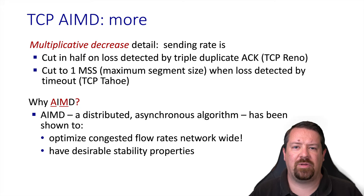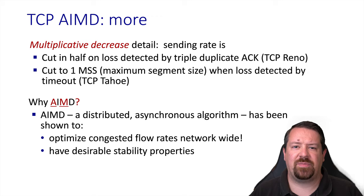The AIMD algorithm has some desirable properties. One is that it can be implemented in a completely distributed manner, so the network does not have to coordinate the increase and decrease events. It also has desirable stability properties, which was necessary after earlier versions of TCP resulted in network collapse due to not reducing their sending rates enough when congestion occurred.